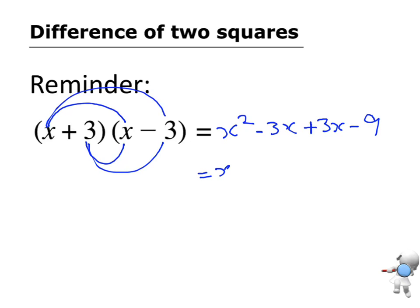Then I need to simplify. x squared stays alone. Minus 3x plus 3x, that term cancels. And I'm left with x squared take away 9.